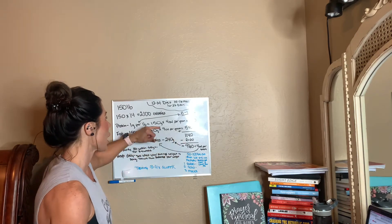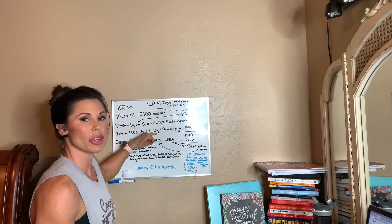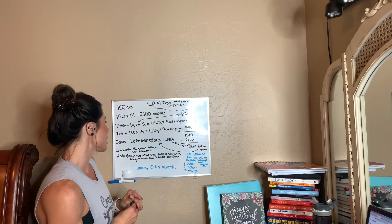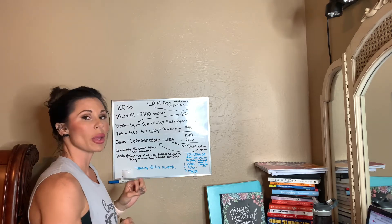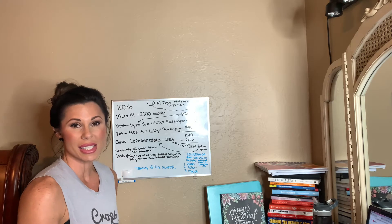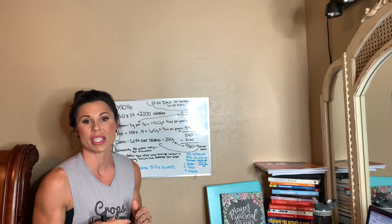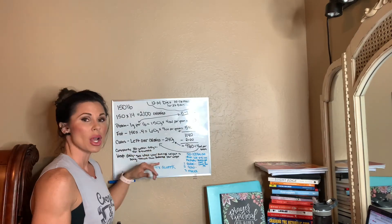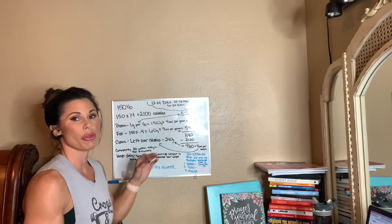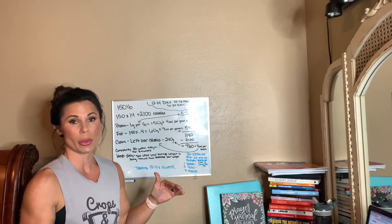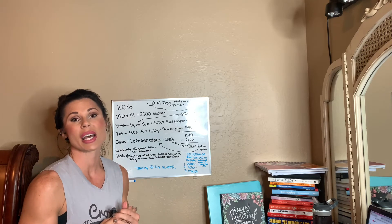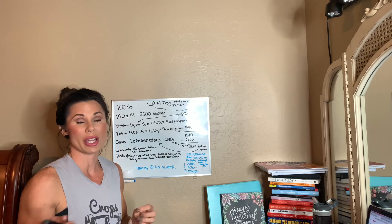So her macronutrients would be 150 grams of protein, 60 grams of fat, and 240 grams of carbs. I would have her follow this for two to four weeks, very consistently — meaning hitting those numbers within five to ten grams, plus or minus. We track weight at least five times a week and average it. If weight is trending down over those two to four weeks, there's nothing to change — just keep hitting those numbers until you plateau.